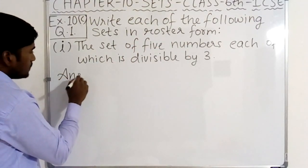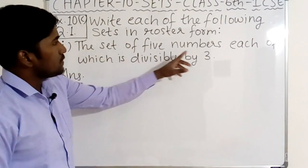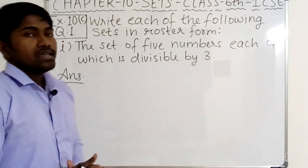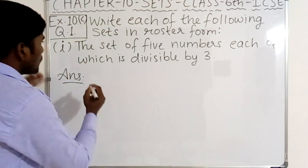How do we write in roster form? First we will see what we read. The set of 5 numbers, each of which is divisible by 3. We will make the set of 5 numbers and the numbers are divisible by 3. So what do we write in roster form?